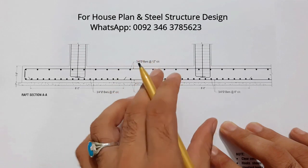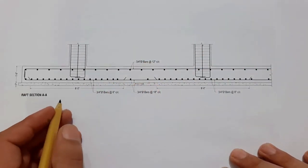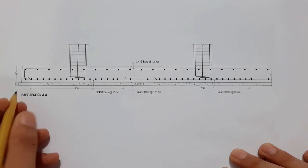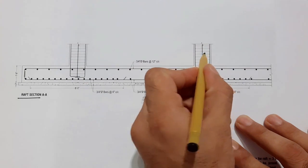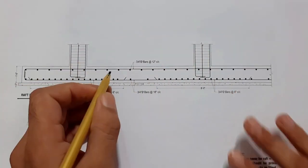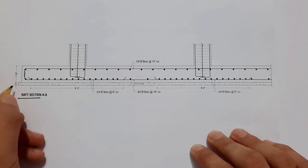Let's start. You can see this is the raft section with two columns - this is a column and this is the second column in this section. First of all, you can see...